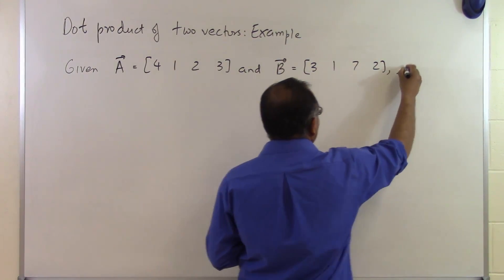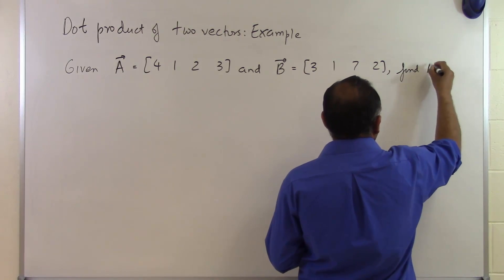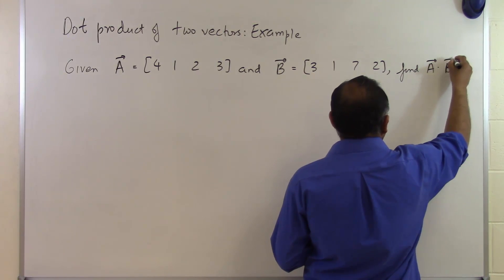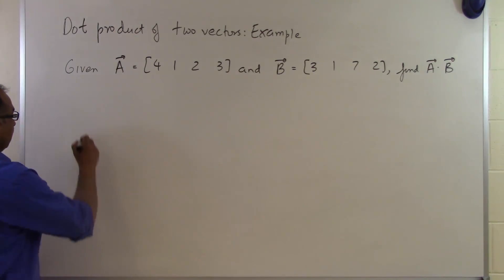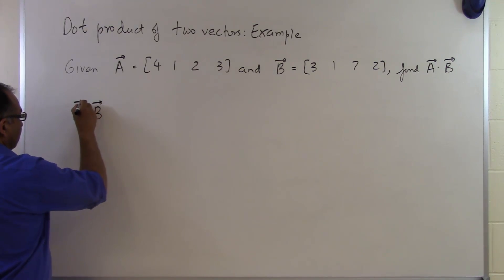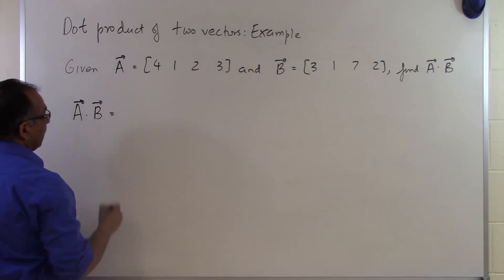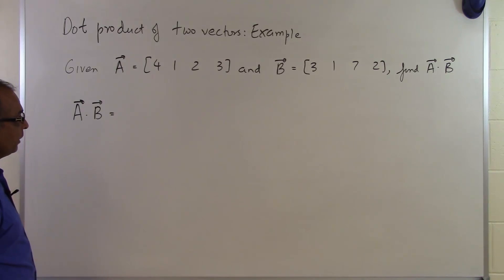And we are asked to find the dot product of two vectors, which is A and B. So how do you find the dot product of A vector and the B vector? Simply looking at the corresponding components, multiplying them to each other, and then adding the result up.